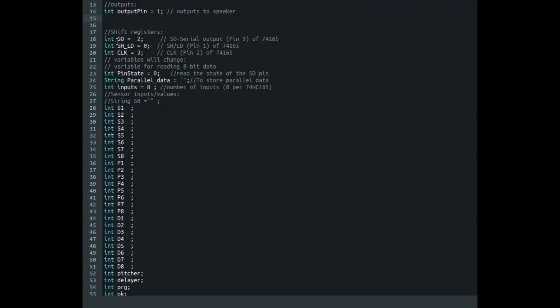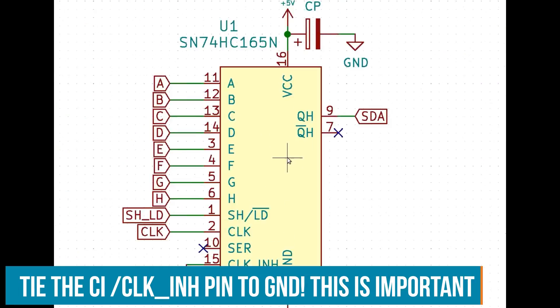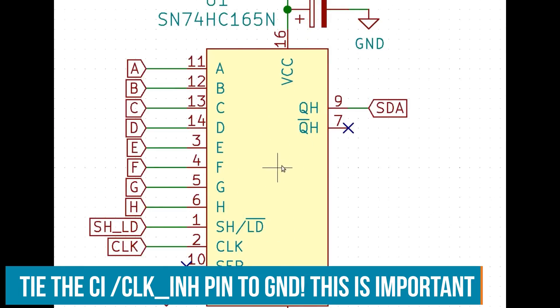Then we need some pins to interface the shift register. Serial output. SHLD is parallel load or serial output. So if you put that high, it changes the state. And we have a clock signal for the shift register.